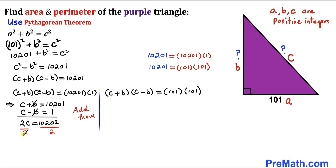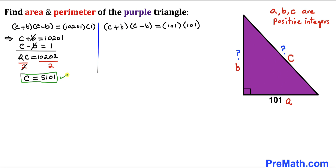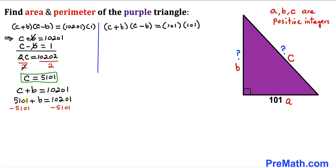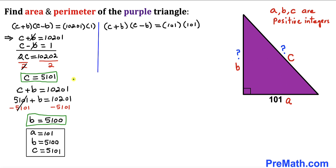Dividing both sides by 2, c = 5,101. Substituting c = 5,101 into the first equation gives 5,101 + b = 10,201. Subtracting 5,101 from both sides, b = 5,100. So for this scenario, a = 101, b = 5,100, and c = 5,101.